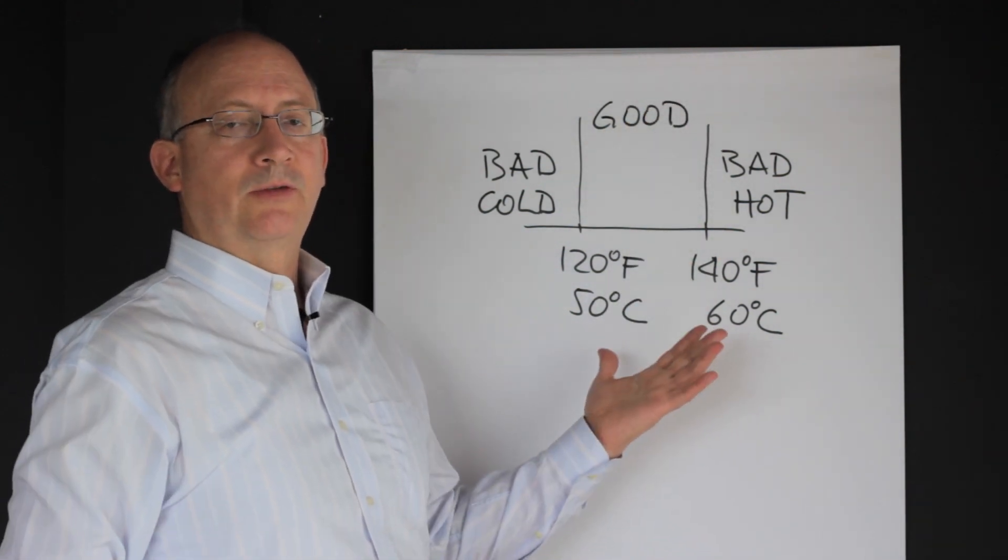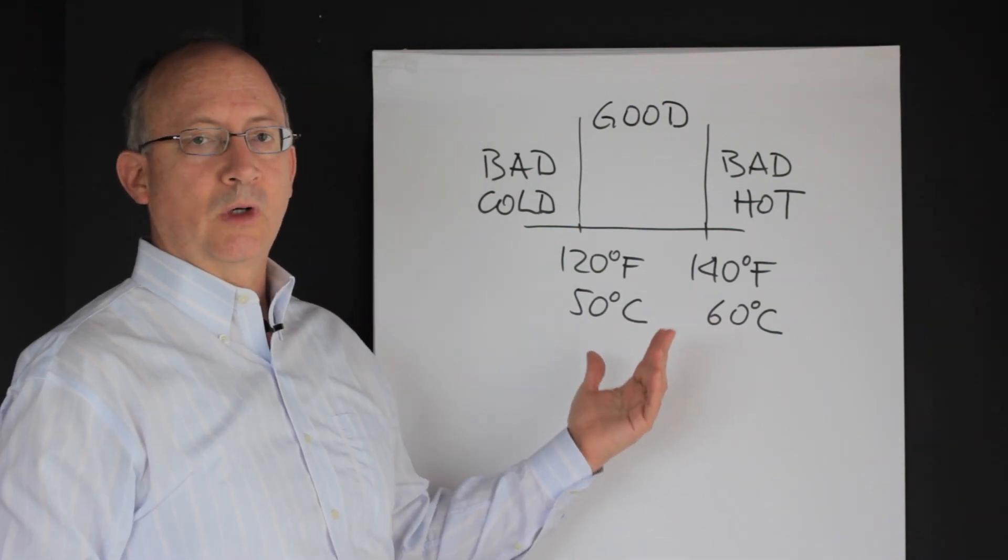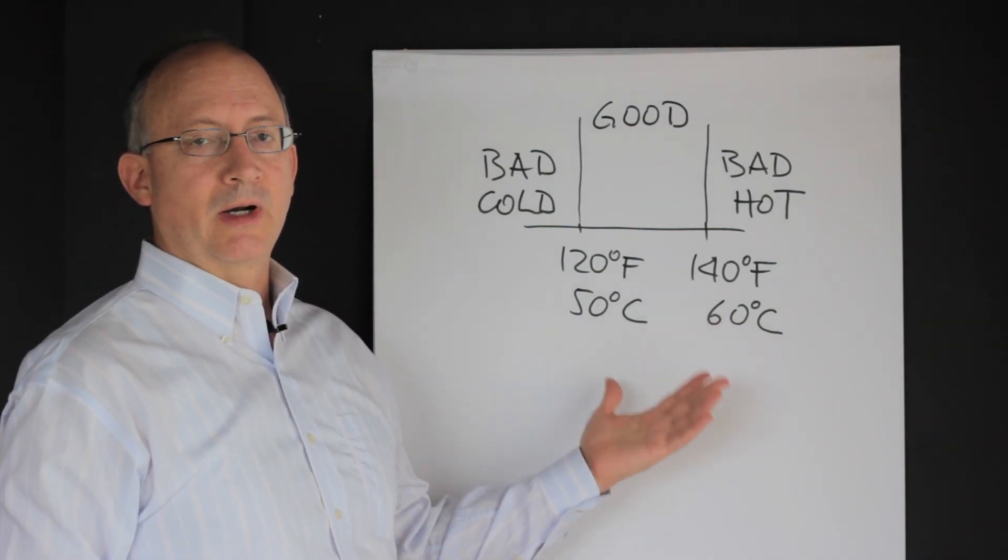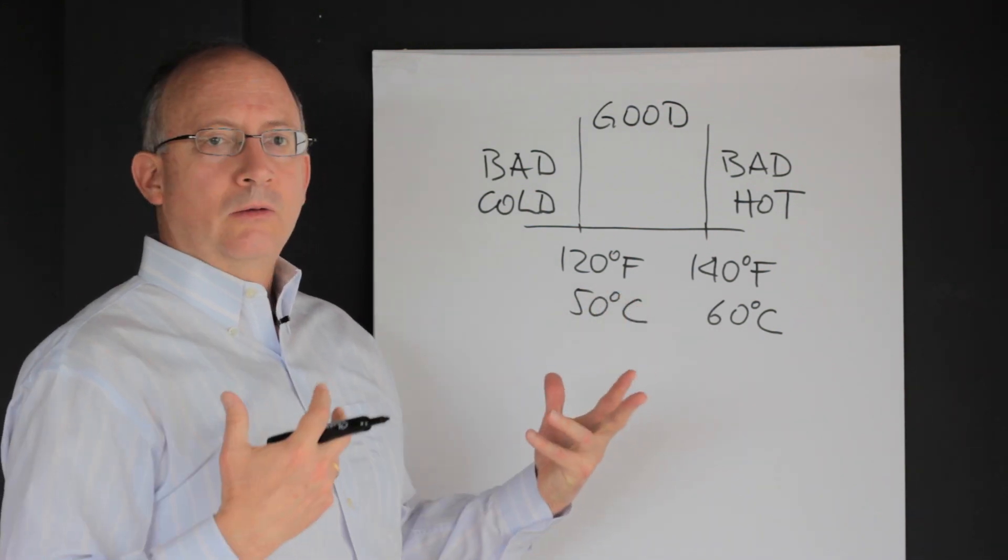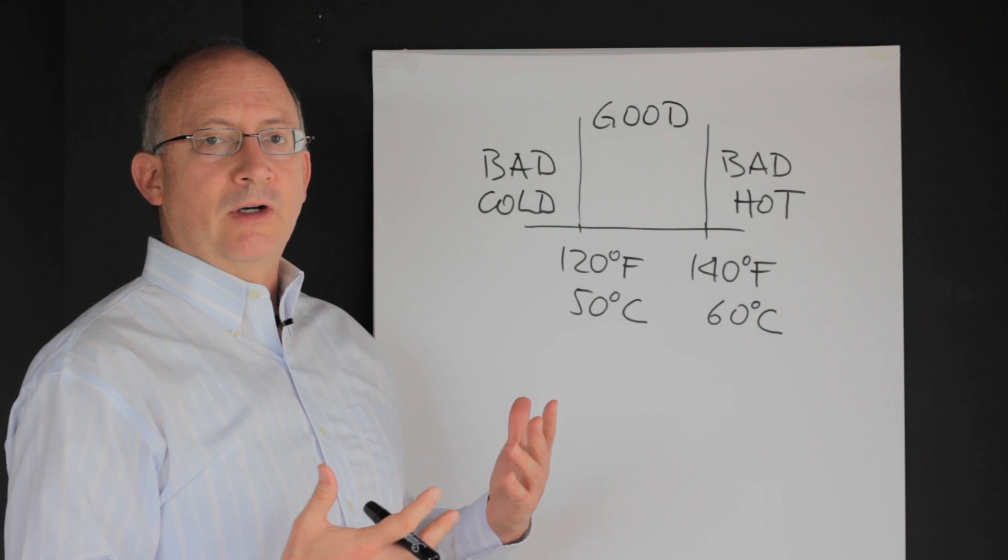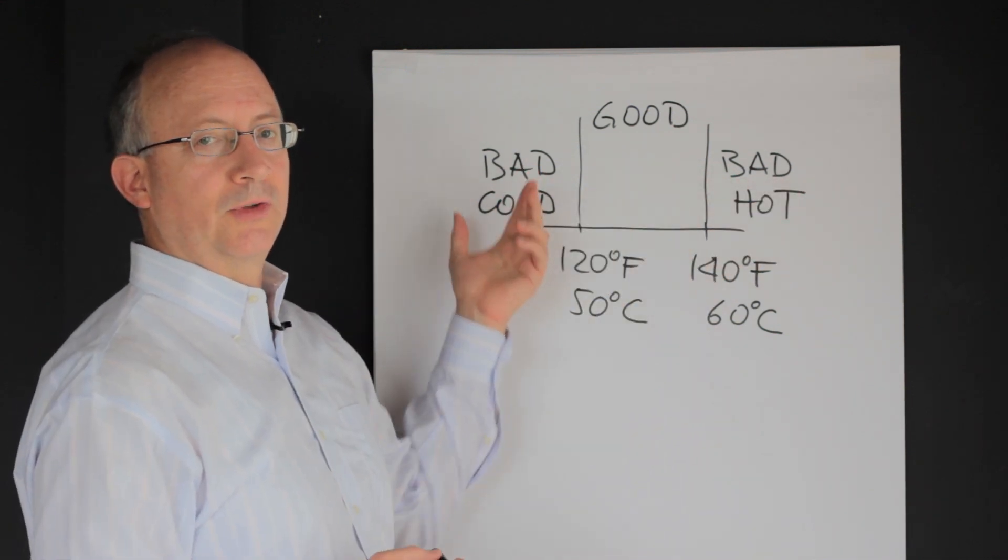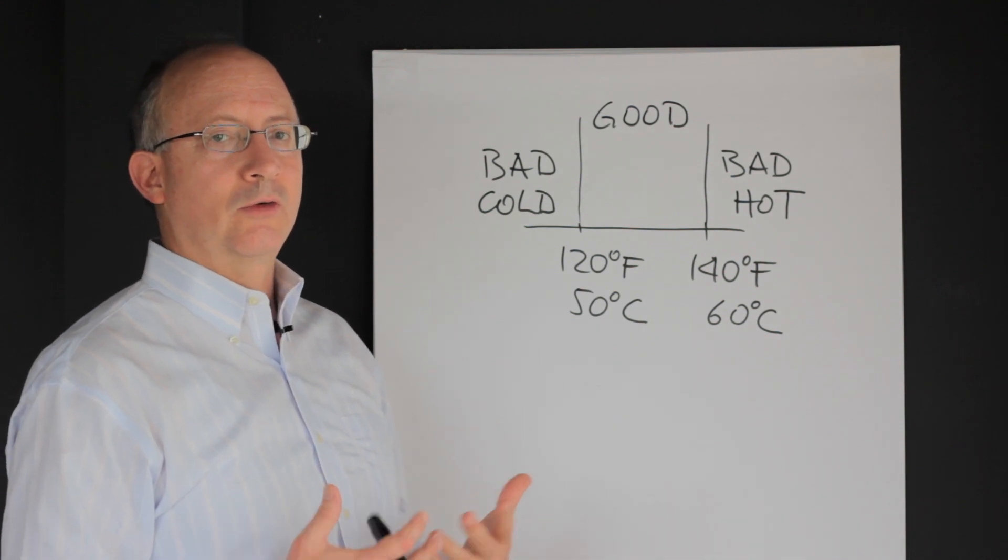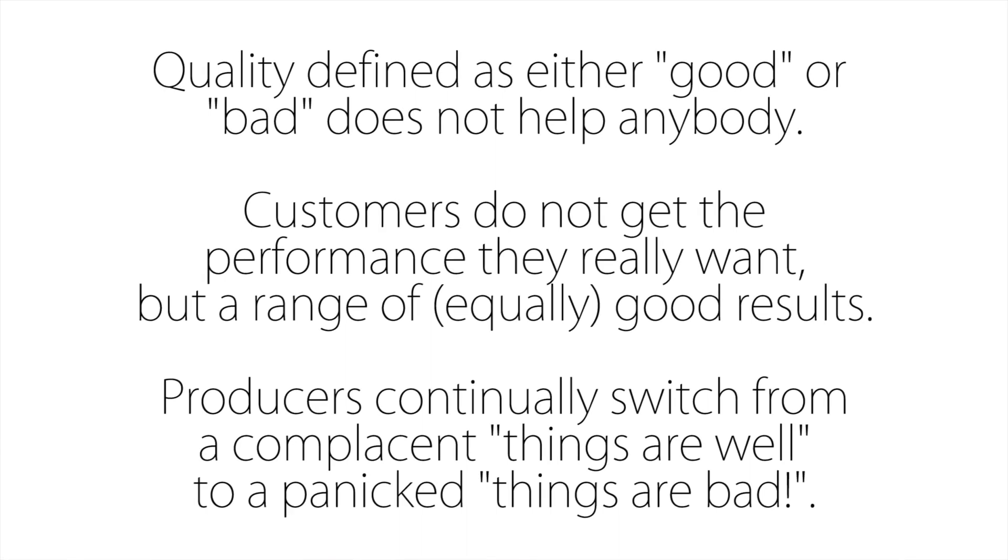Observe that when quality is looked at, when a critical to quality parameter is looked at in this way, the sense of quality becomes binary. Either you are in the good part, or you are bad on both sides. So there is no nuance, there is no gradation, there is no sense of variation, which is actually intrinsic to the world itself and to any type of processes. This can be really an oversimplification of things.